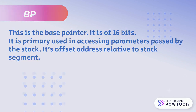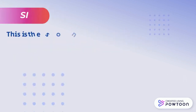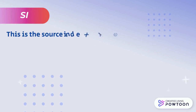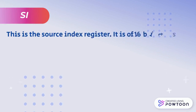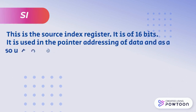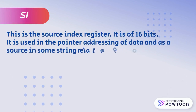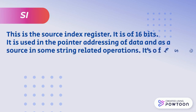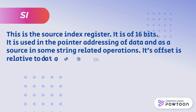The seventh register is SI. This is the source index register. It is of 16 bits. It is used in the pointer addressing of data and as a source in some string related operations. Its offset is relative to the data segment.